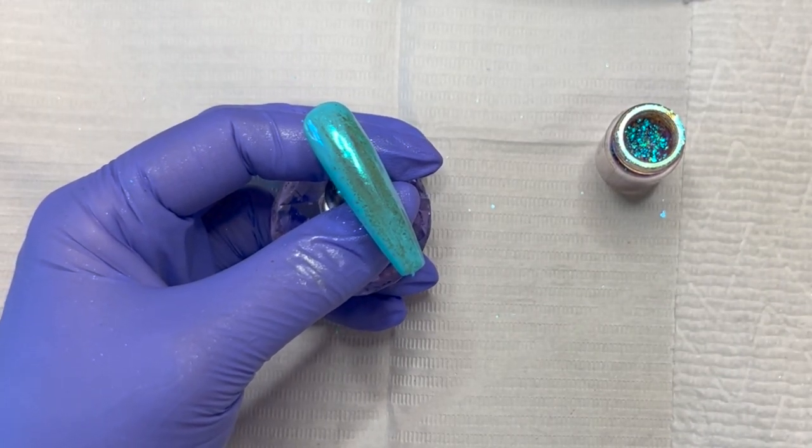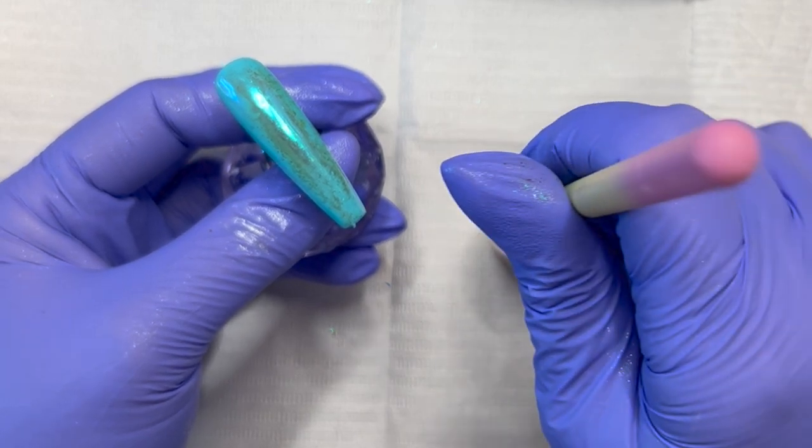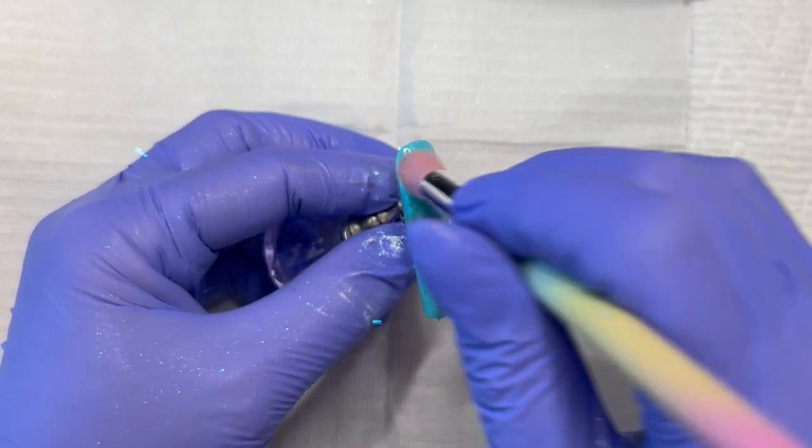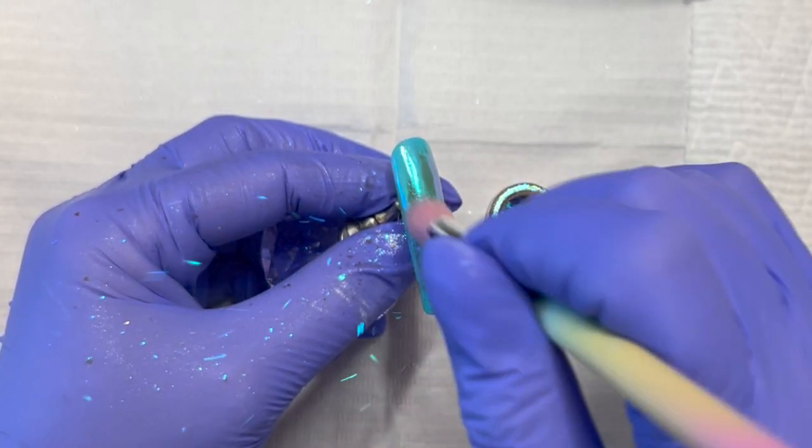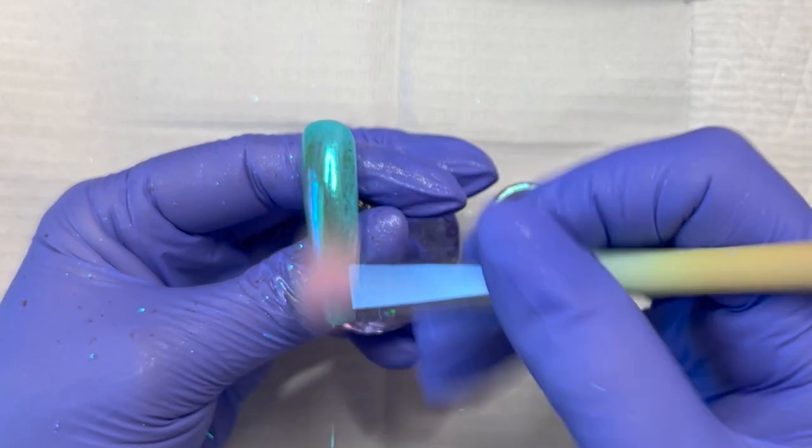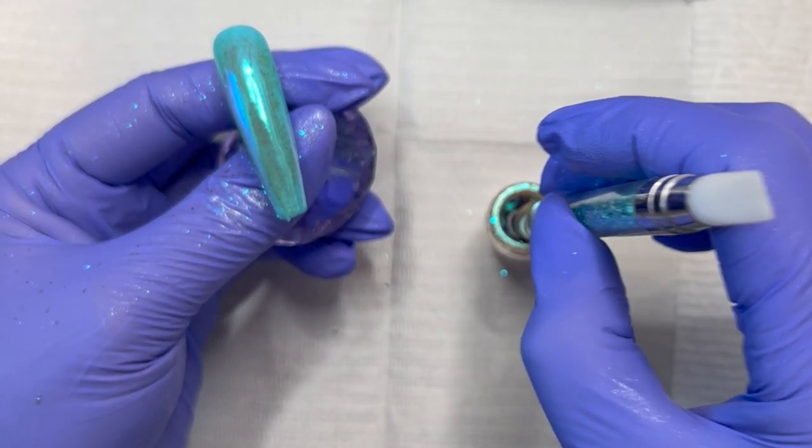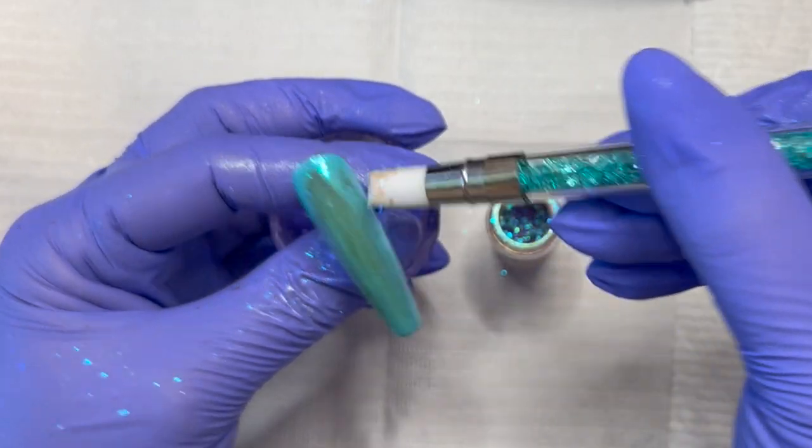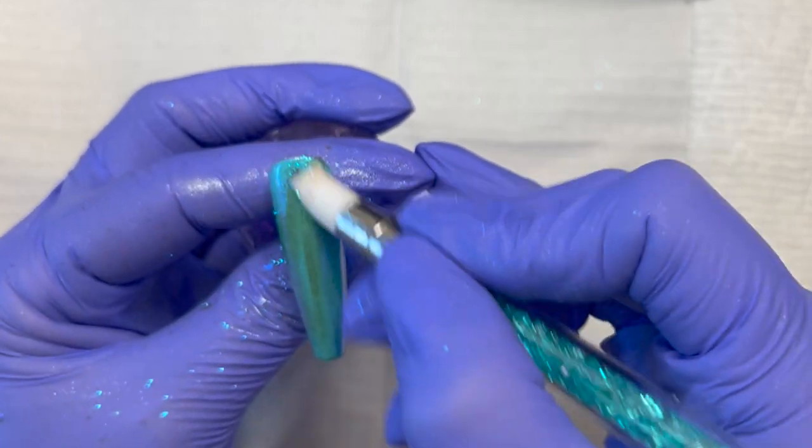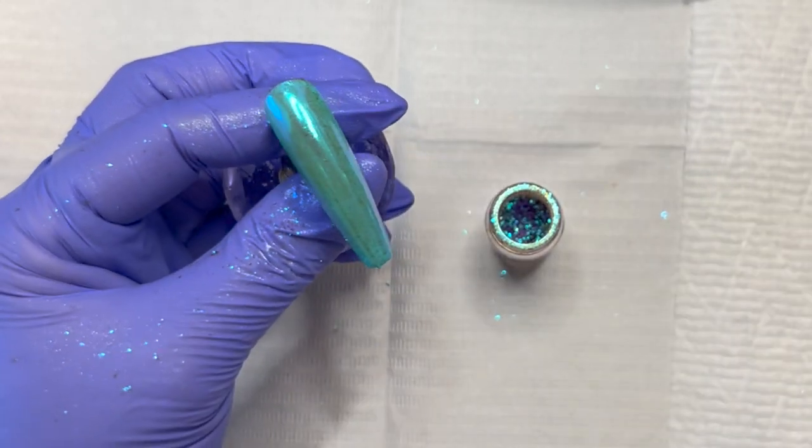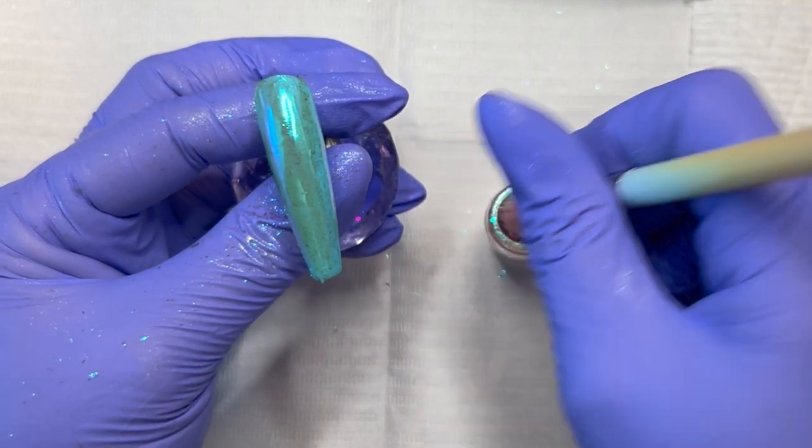Sometimes with the flakes, it works better to use a fluffy brush. I'm just going to dip it in here. If you don't have a fluffy brush but you have a silicone tool, you can use that as well, or you can go back and forth if you can't decide.